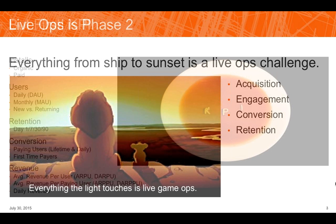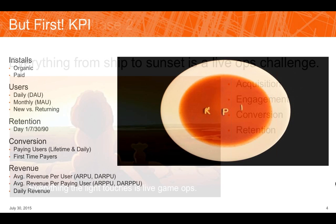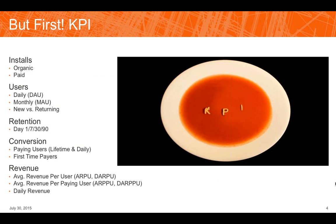We'll also have a link so you can email questions to us if they come to you later, and we'll have this whole slide deck posted to our website so you can review it or share it. Before we get into those four steps, I want to talk about KPIs — Key Performance Indicators. What puts the live in live ops is really your ability to respond dynamically to the market and to your audience. To do that, you need to understand what's going on.